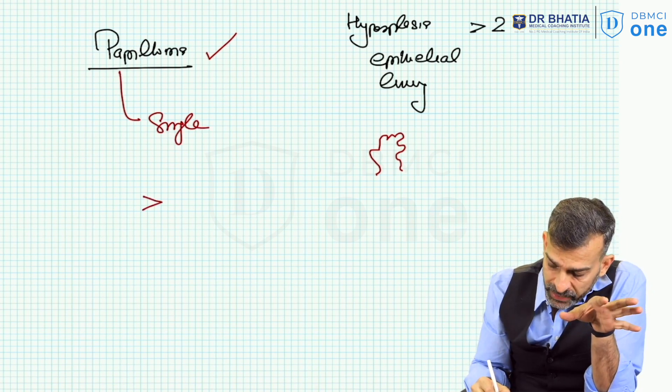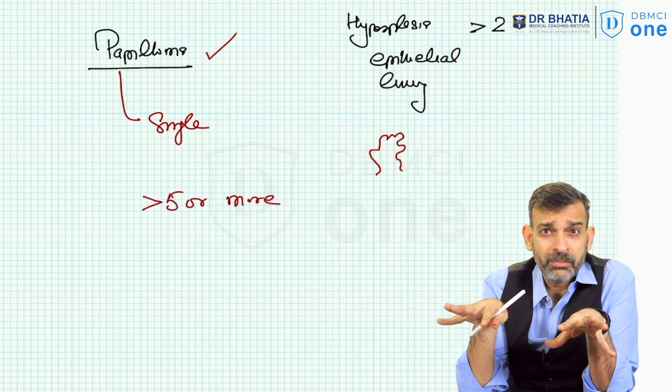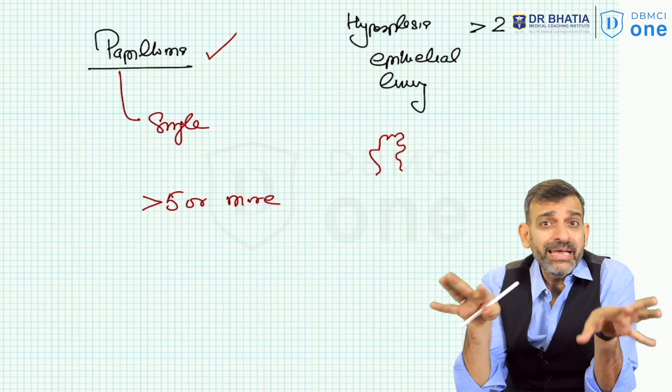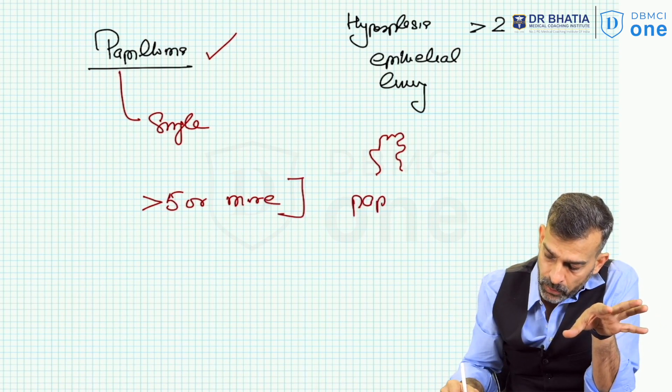If 5 or more than 5, this type of polyps appear in one duct or many ducts, it is called papillomatosis.